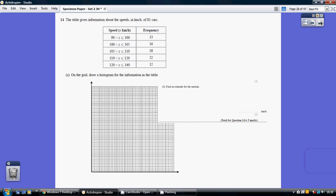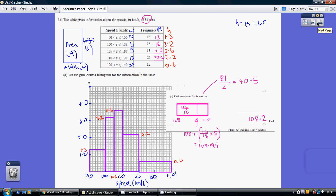Question 14. So part A we've got to draw the histogram and the key bit to remember is that the area of each bar has to equal the frequency.